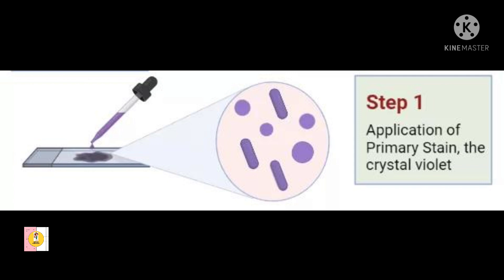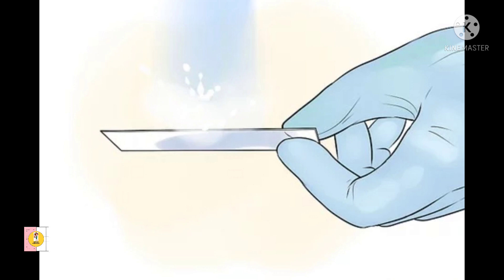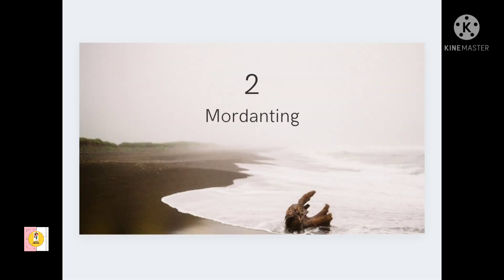The first step is primary staining. We will cover the smear with 0.5% methyl violet — methyl violet is a dye. We will cover the smear with this dye solution and allow it to act for 30 seconds. Then we will wash the smear with water.